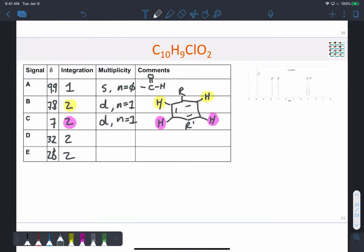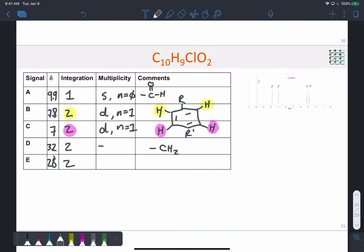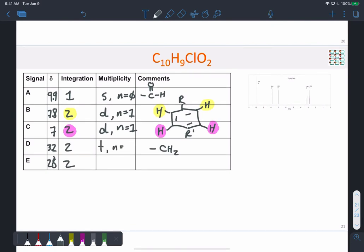And then in here, with 2 protons, it could be 2 equivalent, chemically equivalent CHs. It could also be CH2, and what was that multiplicity? Triplets. So triplets with N equals 2.